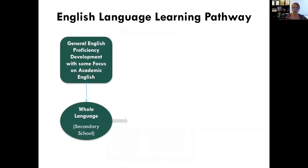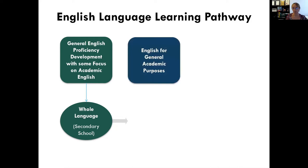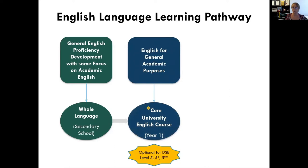Most of you have just come from secondary school where you have focused on developing your general English proficiency with some focus on academic English. When you come to Hong Kong U and the Faculty of Arts, many of you will take a first year course called Core University English, which will help you develop your English for general academic purposes. This is a course taken by all students in every faculty. It's compulsory for level three and level four students and optional for level five, five star, and five star star students.